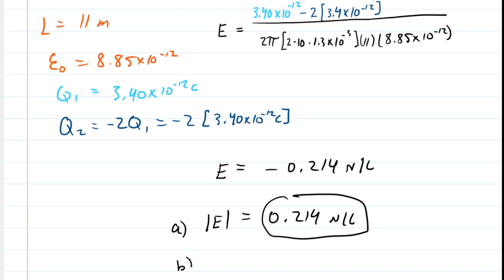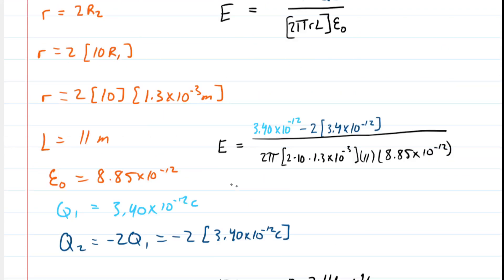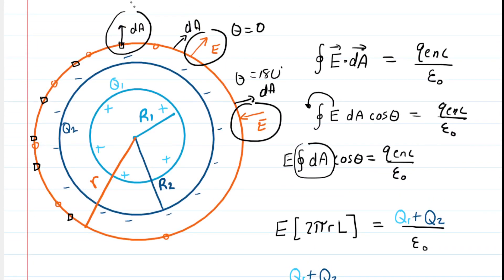Part B asked for the direction. Since the electric field turned out to have a negative value, that means it is pointing radially inward. Going back to our drawing, all of the electric field vectors on the Gaussian surface point inward, which is confirmed by that negative sign.